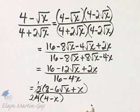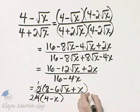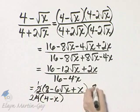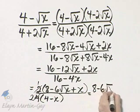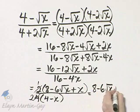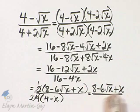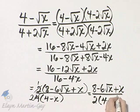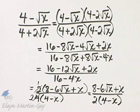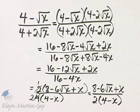Let me go ahead and write my answer. That is 8 minus 6 square root of x plus x in the numerator. In the denominator, we have 2 times 4 minus x. Notice I've rationalized the denominator. By the way, you can multiply the terms in the denominator, but I'll leave it in this form.